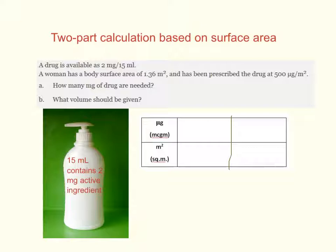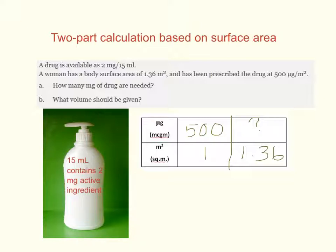Our order is for 500 micrograms for every 1m² of skin. This woman has 1.36m² of skin to be covered, so the unknown number we're looking for is in the top box of the table. Thinking about reasonableness: if she had 1½m² of skin, 1½ times 500 would be 750 micrograms. Since 1.36 is a bit more than 1⅓m², we certainly expect our answer to be between 500 and 750 as a ballpark figure.